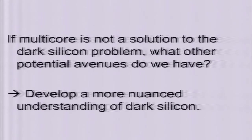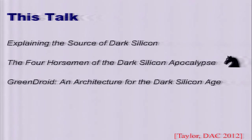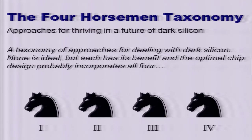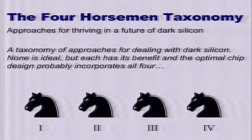Once you accept the utilization wall, the next question is: if dark silicon is a reality, what are the kinds of things we could do to take advantage of it? We want to develop a more nuanced understanding of dark silicon and the approaches for dealing with it. When I did my initial work on the utilization wall, I talked to a lot of people and argued with them, and everyone had their own approach. I started to group these into a taxonomy — a taxonomy of arguments about what the solutions to dark silicon are.